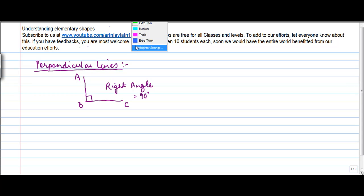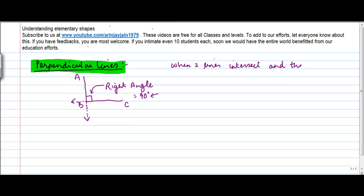In this video we are going to understand perpendicular lines. You have seen earlier that there could be a situation where two lines intersect and they form a right angle between them. This angle is a right angle which is equal to 90 degrees. So when two lines meet, when two lines intersect and the